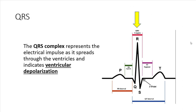The QRS complex represents the ventricles firing or depolarizing, and it encompasses the Q, R, and S waves. When a doctor looks at a heart monitor, they're often looking at the overall QRS complex rather than each individual wave, until they identify that there's a problem.